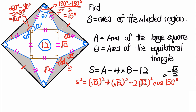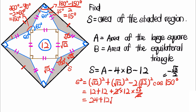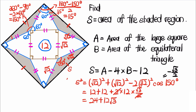So we have 12 plus 12 minus 2 times 12 times (negative √3 over 2). The negative sign makes it a positive term, and the 2 cancels out, giving us 24 plus 12√3. We also realize that s² is essentially the area A that we want to find. So A equals 24 plus 12√3.